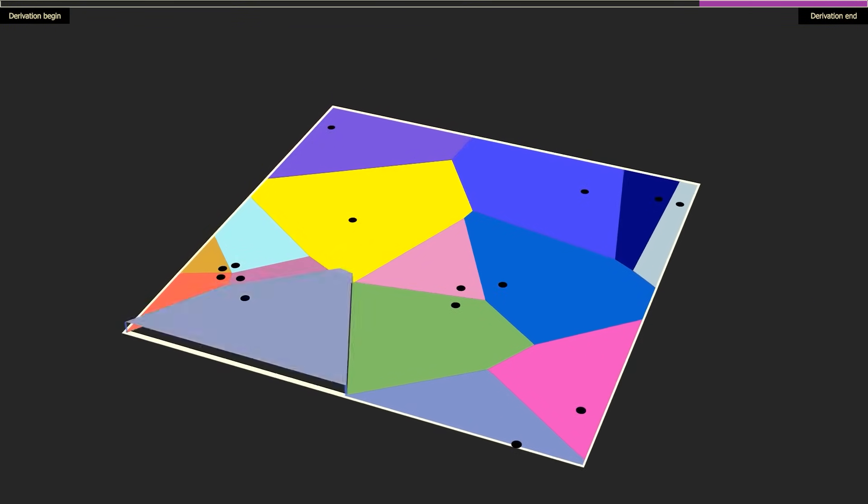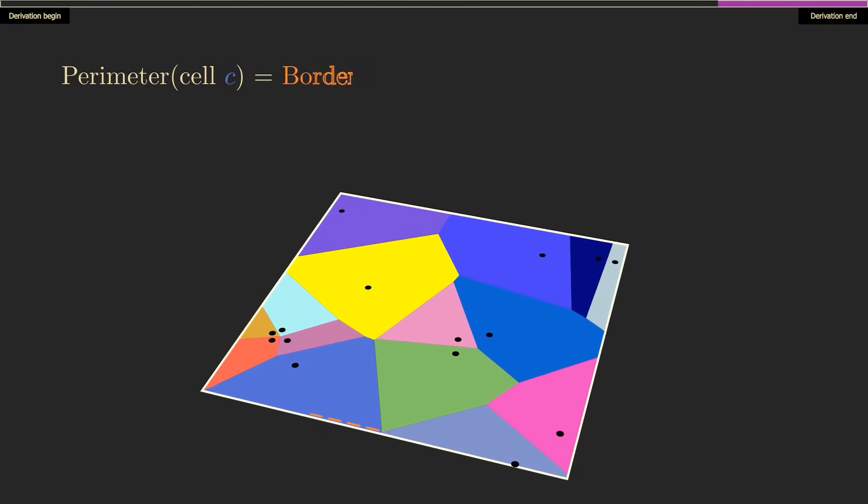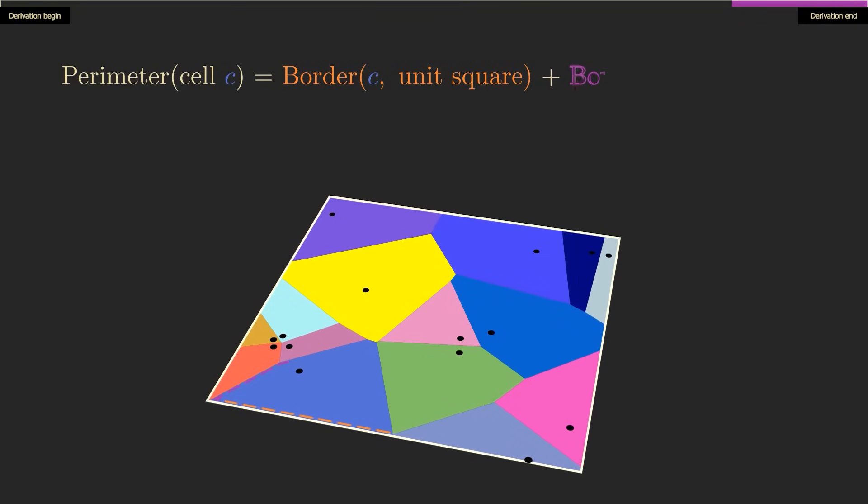We almost have an exact formula. Now we can reason about a cell's perimeter, which can be broken up into two parts. The part on the border of the unit square, and the part that borders other cells.